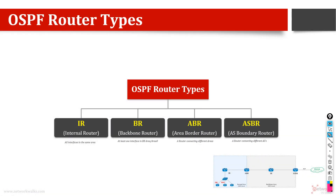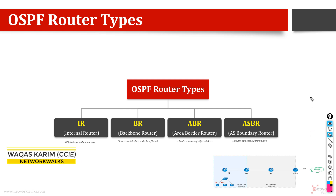How many types of routers do we have in OSPF? We can categorize them based on multiple criteria, but let's categorize them based on their placement — based on the topology. So we have mainly four types: internal router, backbone router, area border router, and AS boundary router.